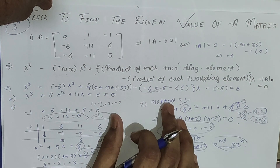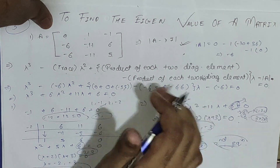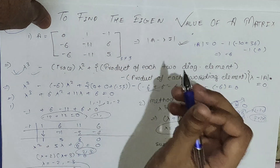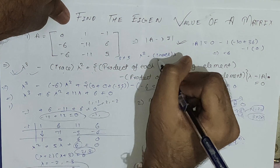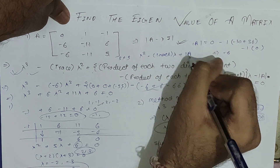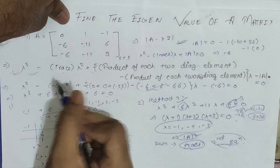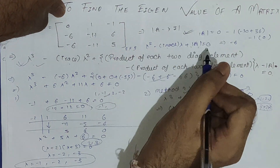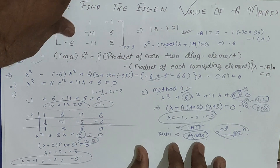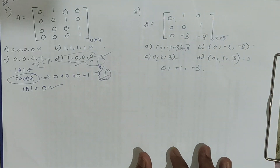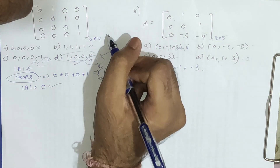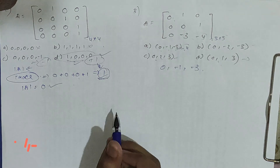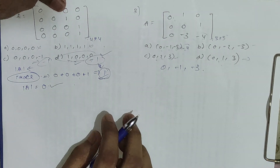In conclusion: when no options are given, use the characteristic polynomial formula. For a 2 by 2 matrix: lambda squared minus (trace) times lambda plus determinant equals zero. For a 3 by 3 matrix: lambda cubed minus (trace) times lambda squared plus (sum of products of diagonal pairs) times lambda minus determinant equals zero. Note that the signs alternate. When options are given, directly use the trace and determinant properties to identify the correct eigenvalues.